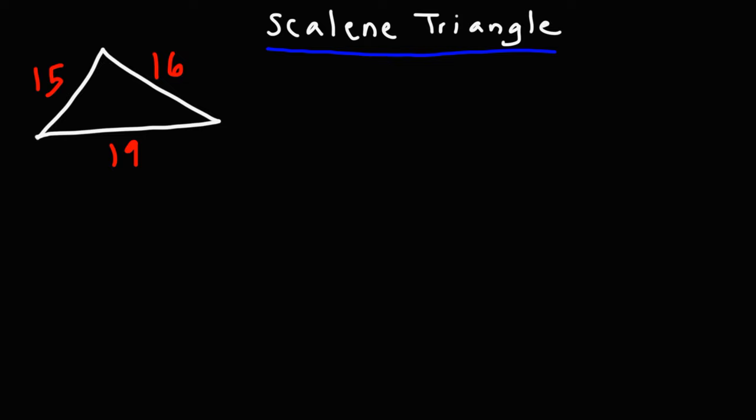In order to calculate the area of a scalene triangle, we have to use Heron's formula. First, we need to find S. S is one-half of the sum of all three sides. So basically, S is one-half of the perimeter.